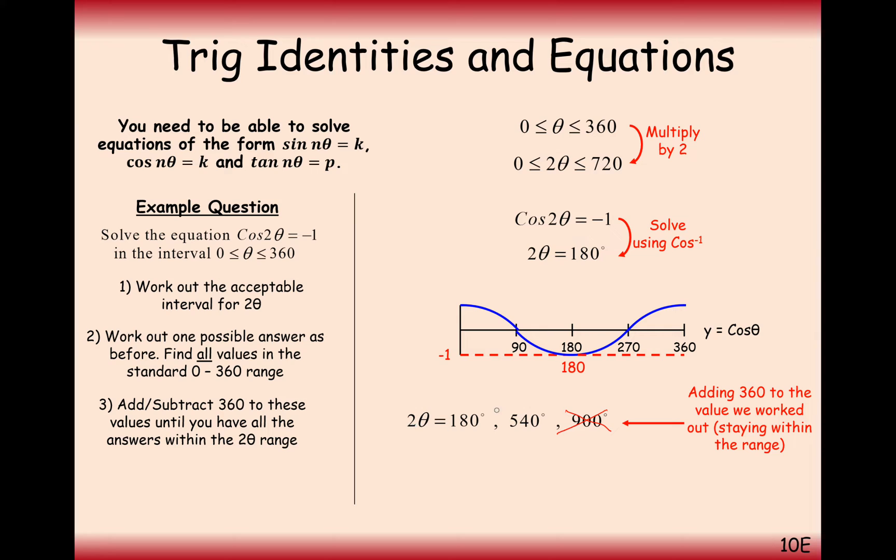Now that we've found all the values that when we do cos of it, we get minus 1 in between 0 to 720, now we half all of these angles to give us what theta needs to be. So theta here is going to be 90 and 270. That's to say that when you do cos of 2 times 90, you get minus 1. And when you do cos of 270, 2 times 270, you get minus 1 as well.